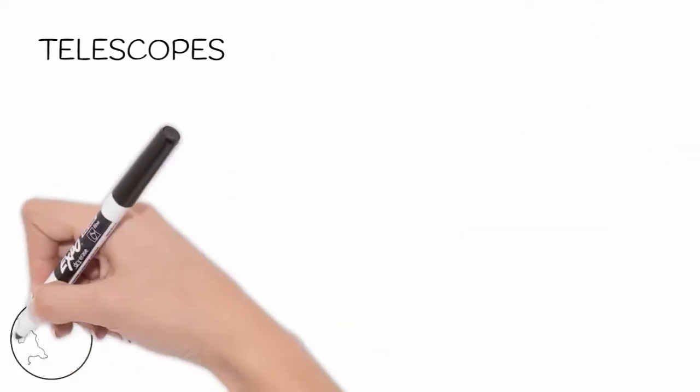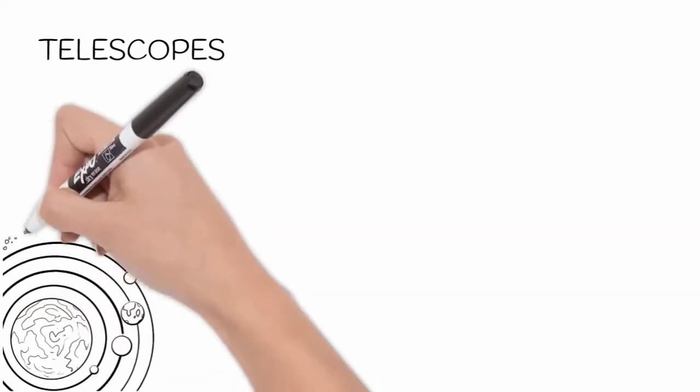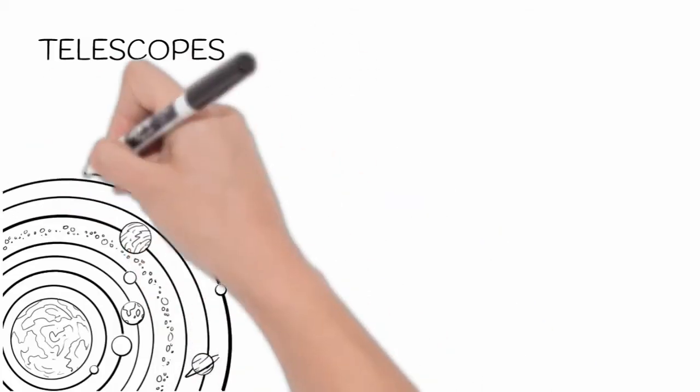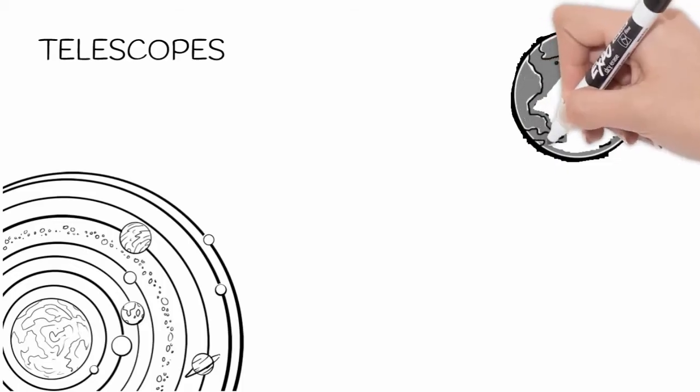Telescopes have since helped us discover lots of things. They helped us discover that the Earth was not the center of the universe as was previously thought, and they showed that the moon has mountains and craters on its surface.